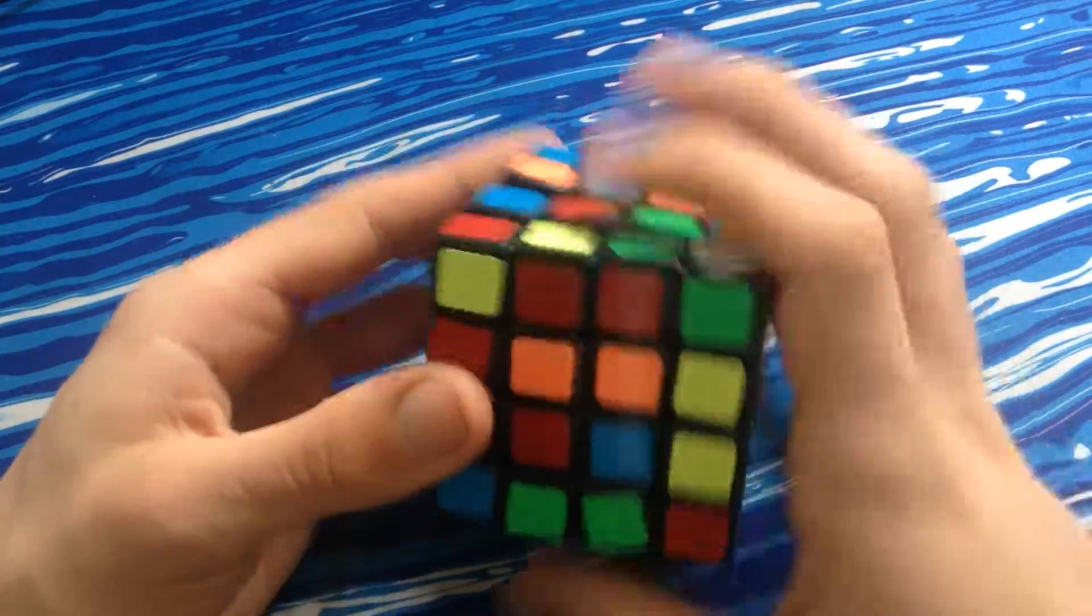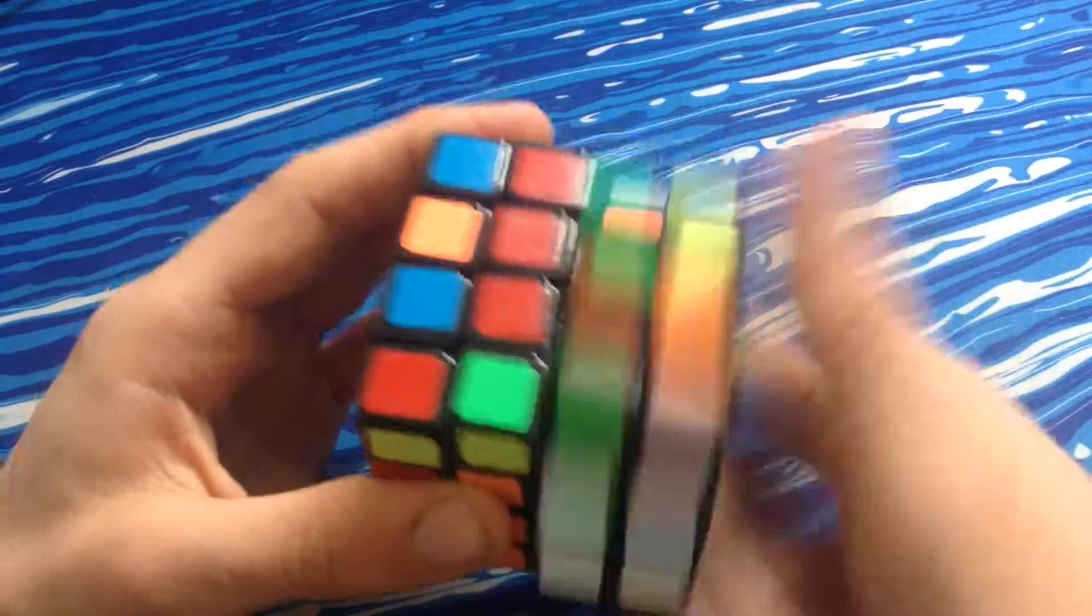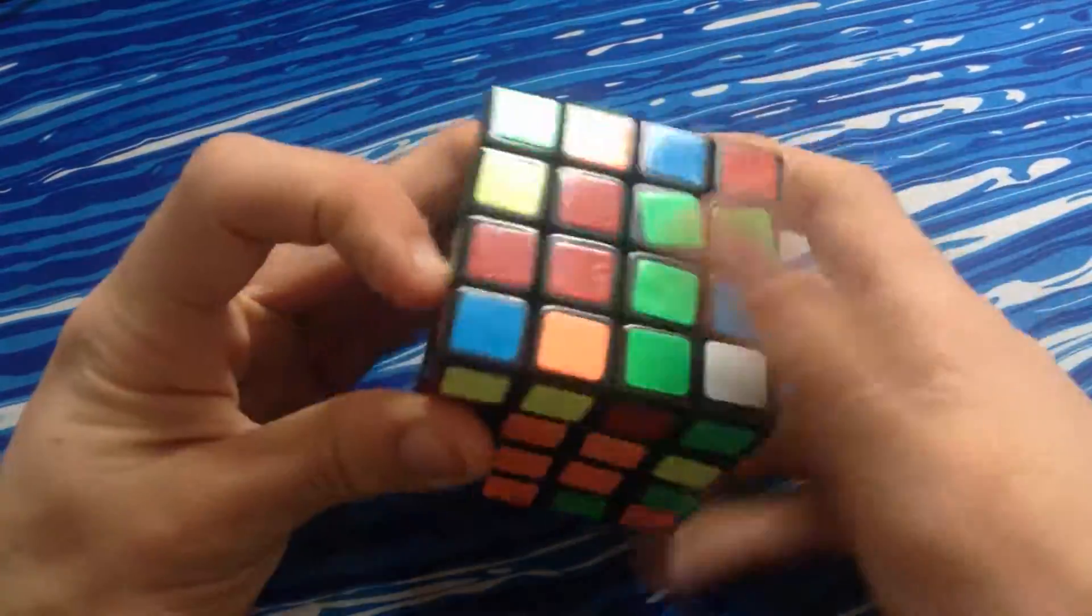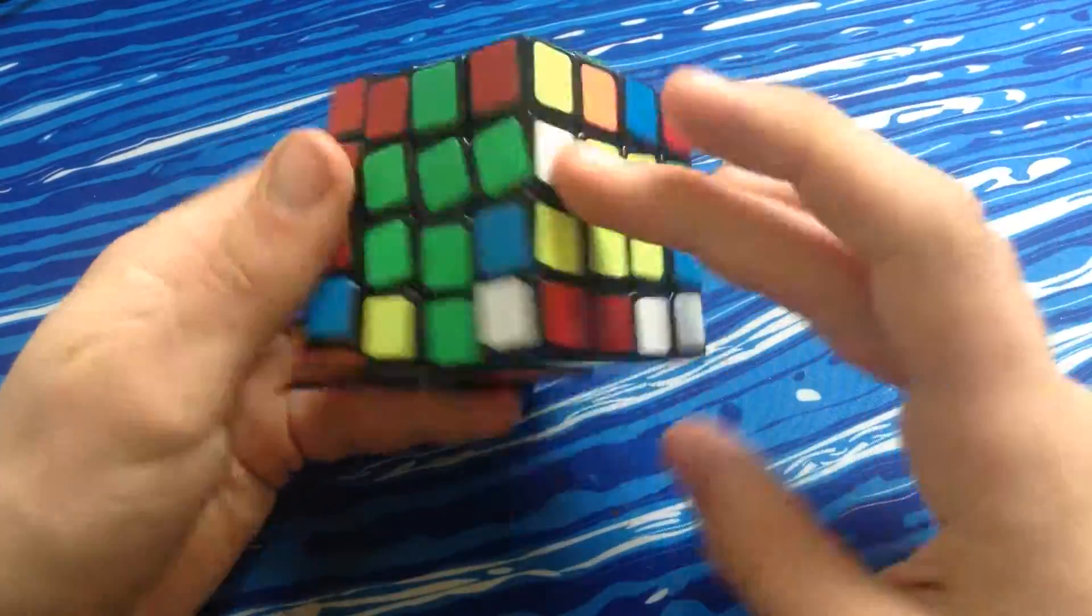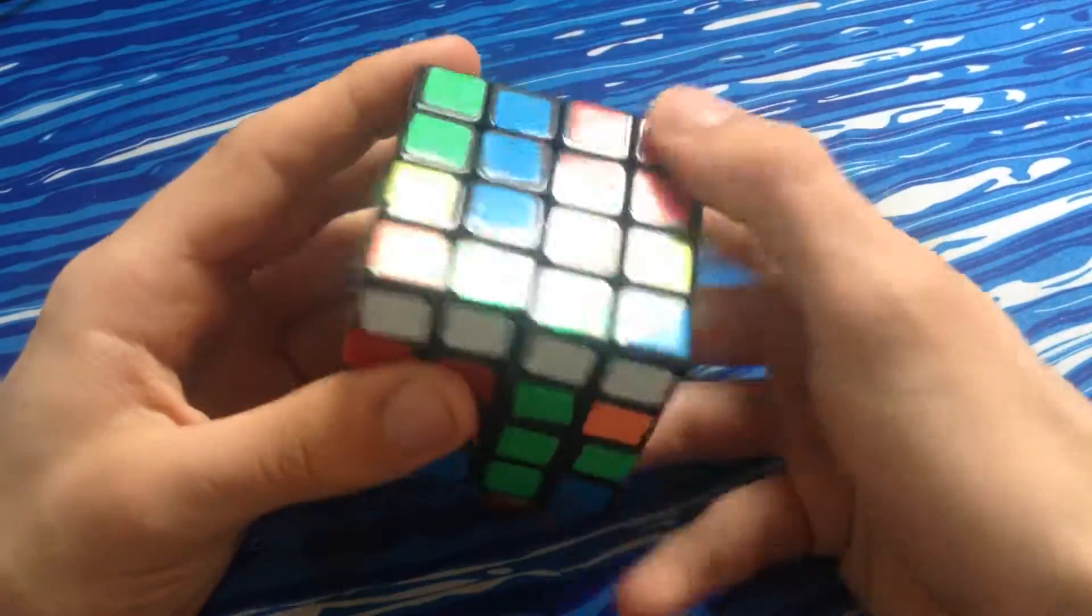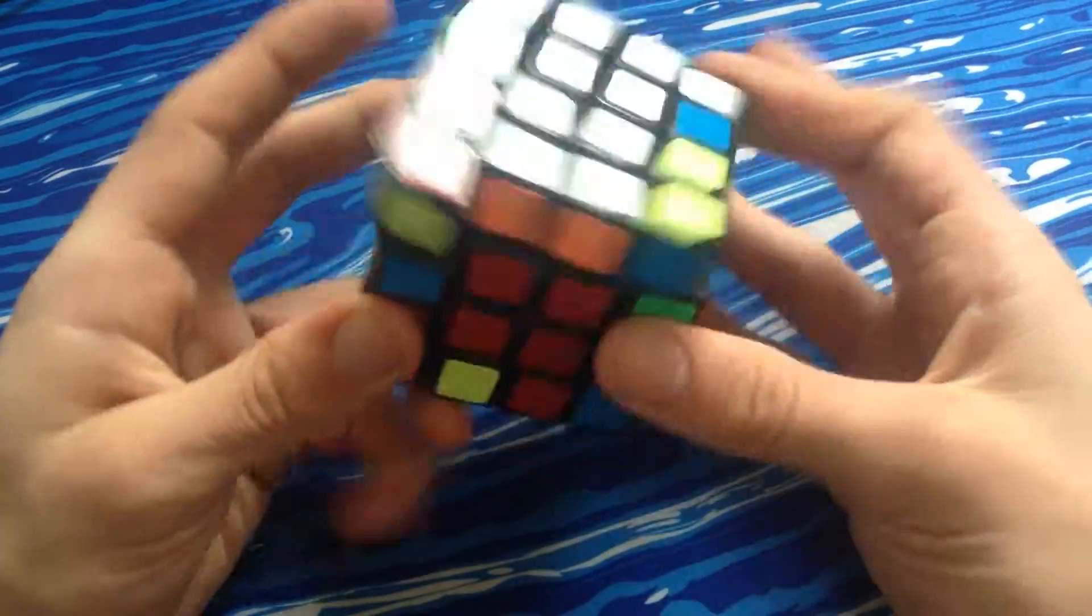So orange is in its correct spot, so I will insert it like so. That solves the blue center, that solves the orange and red. It's supposed to be on the bottom, so there's white green, there's the other white green edge, so I bring that up like so and solve it kind of inefficiently.